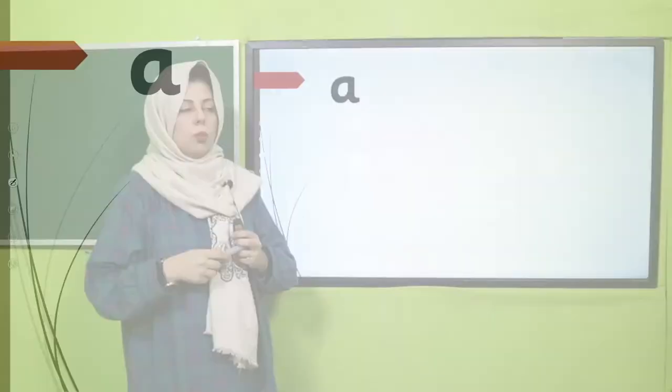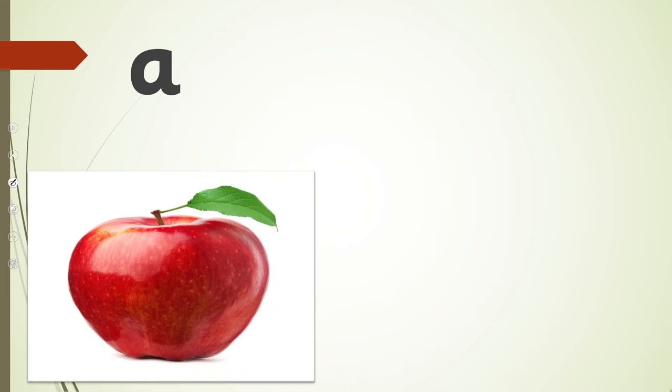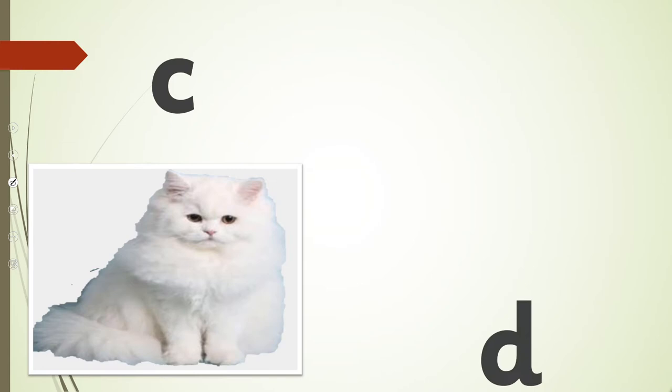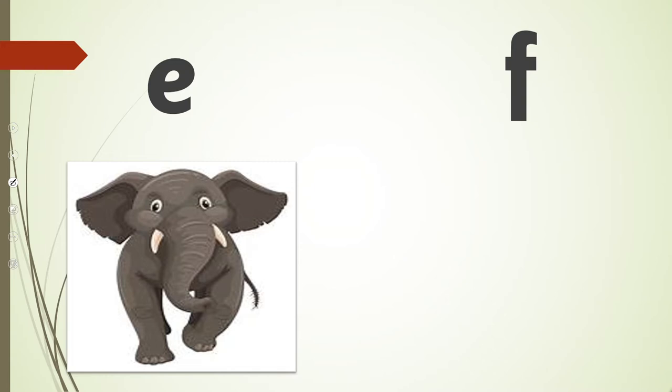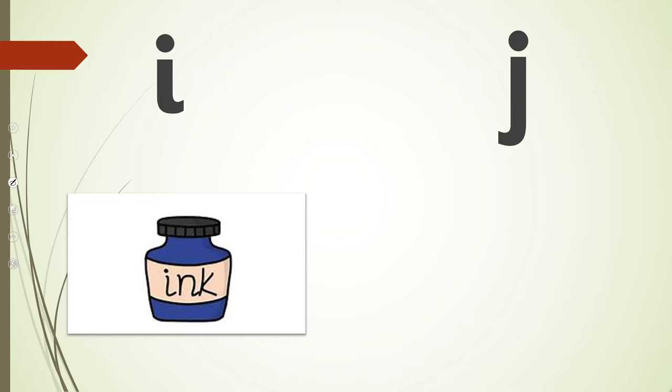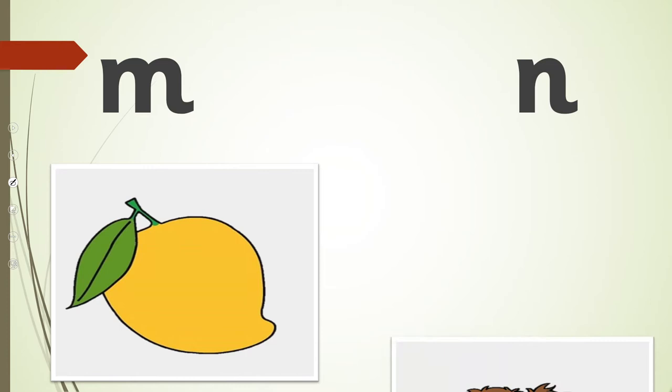So children, focus on the screen. You will see some pictures on the screen and you have to tell what they are. What do you see on the screen? First, this is an apple. Excellent. You have to keep reading. B, ball. C, cat. D, drum. E, elephant. F, fish.